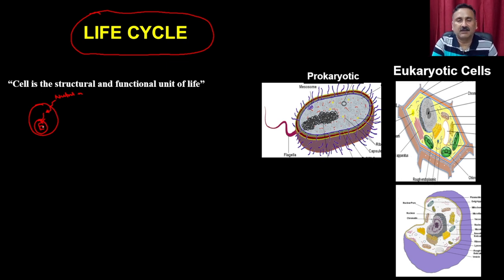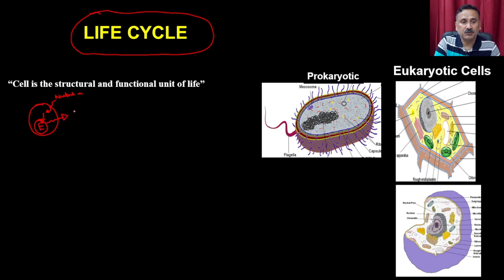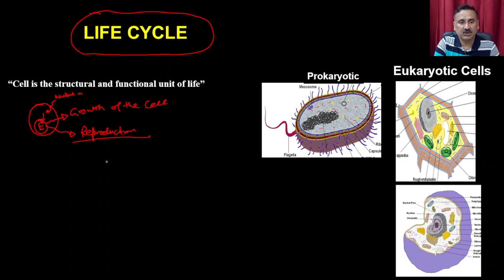We have discussed about carbohydrate metabolism and lipid metabolism. This energy is actually going to be used for many purposes, such as the growth of the cell and the reproduction of the cell, because every cell wants to increase its number. This will continue until the uptake of nutrition and the production of energy is higher compared to the energy required for other processes.